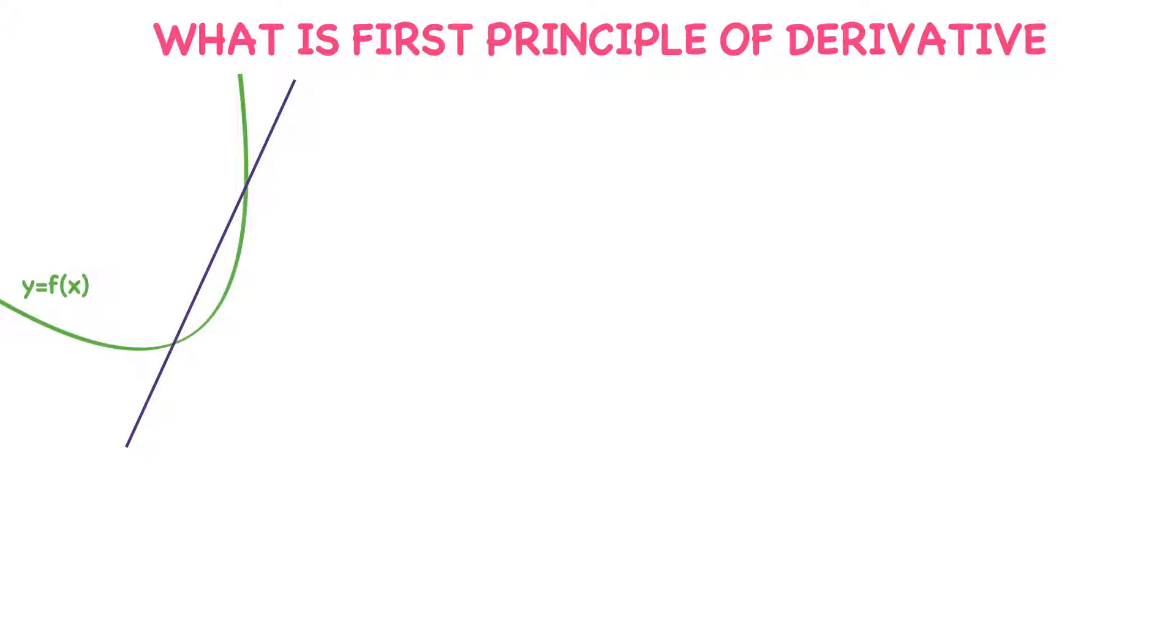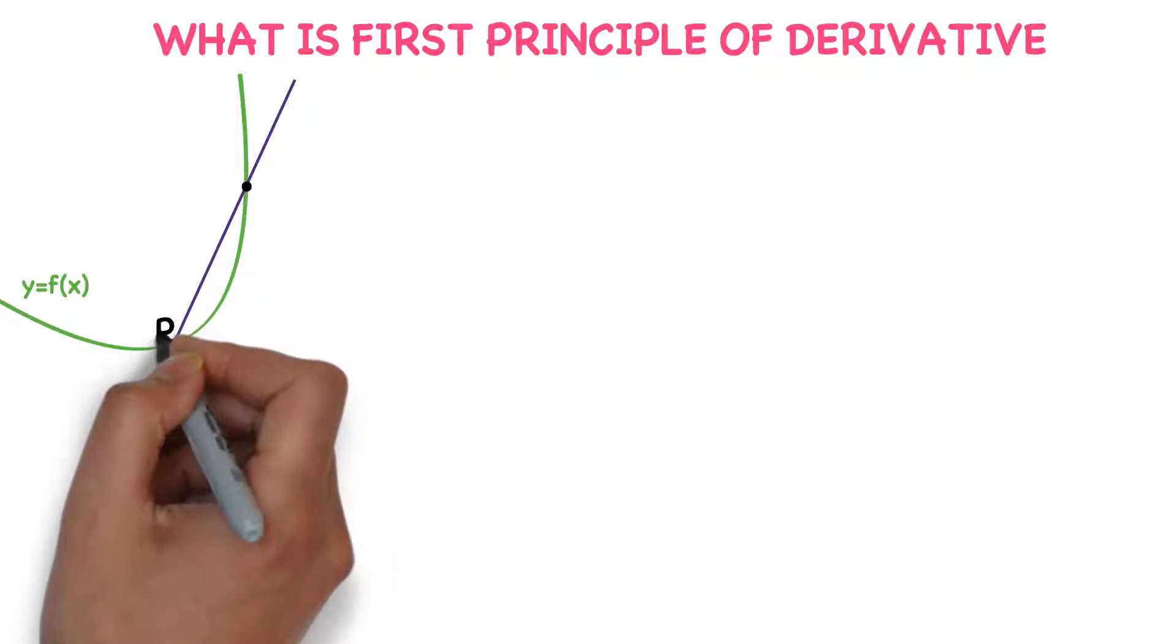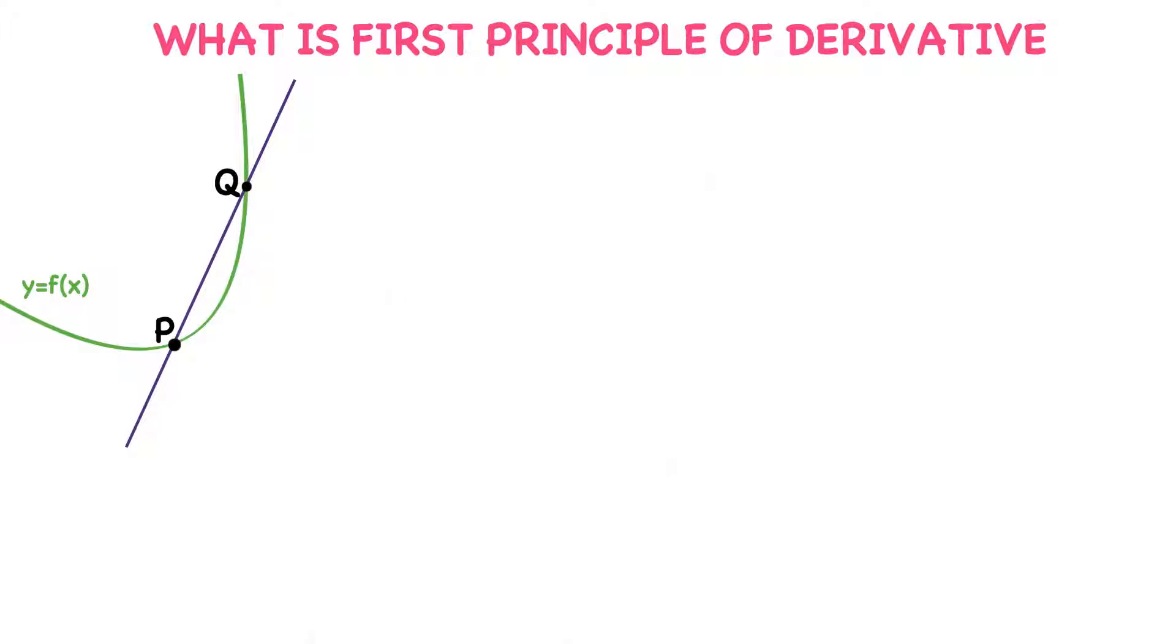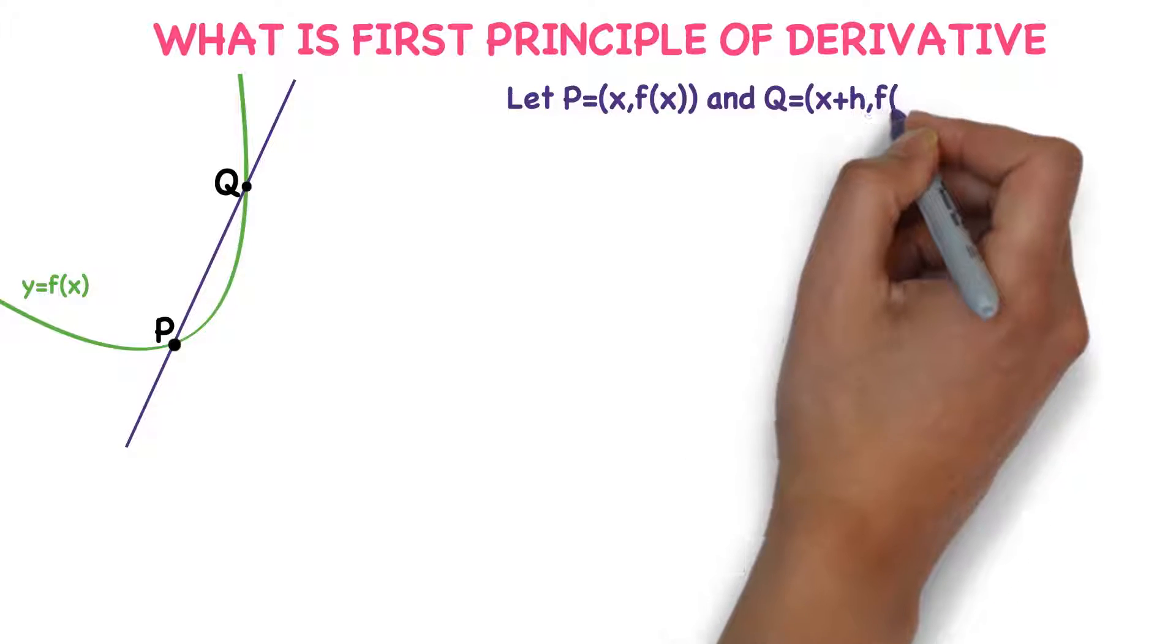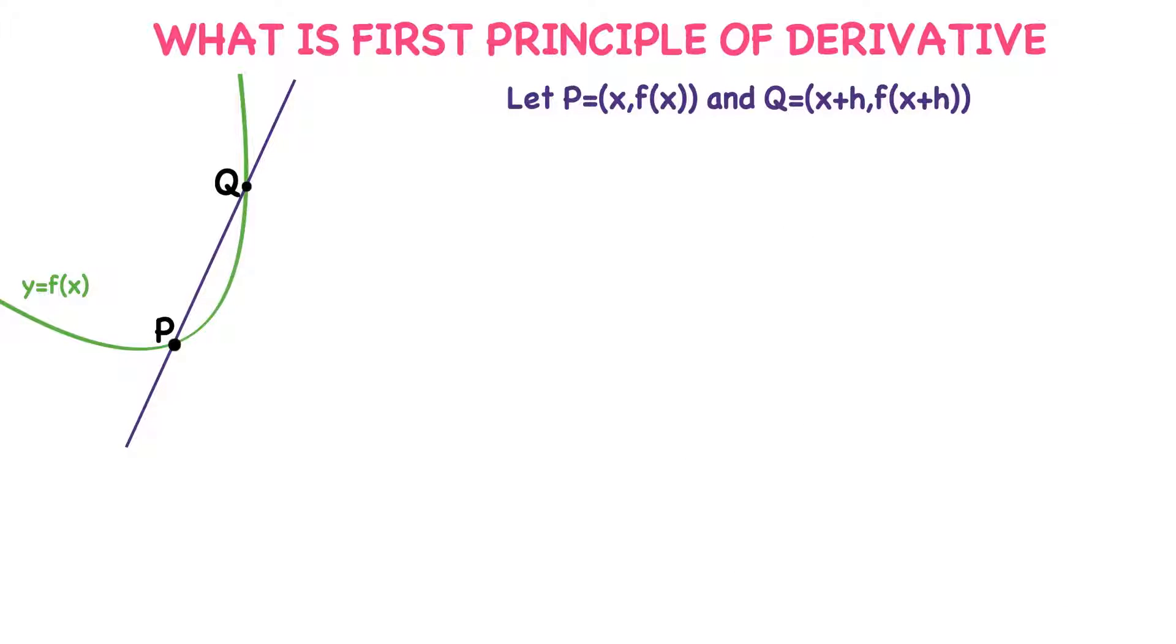What are the points P and Q? Let the point P equal (x, f(x)) and Q equal (x+h, f(x+h)). I already discussed this in Class 2, please watch that video.